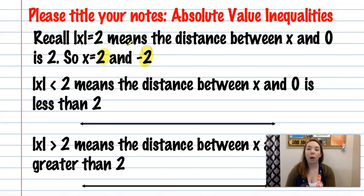When we have inequalities in absolute values, this is saying the absolute value of x is less than 2. Therefore, the distance between x and 0 is less than 2.